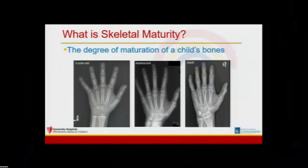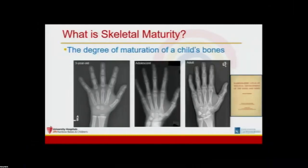Very briefly, skeletal maturity is the degree of development of a child's bones. The basis for skeletal maturity evaluation is that particular ossification centers around the body develop at specific chronological ages in the average child. Most commonly, left-hand x-rays and the Greulich and Pyle atlas are used to evaluate skeletal age. Skeletal maturity has implications in decision-making in many pediatric orthopedic conditions, and most importantly for this talk, it's useful in treating limb length discrepancy.